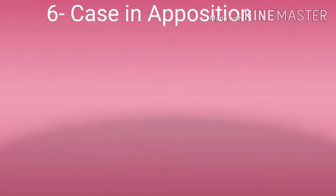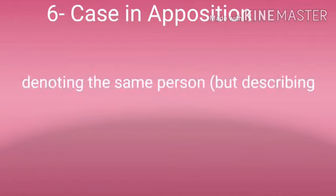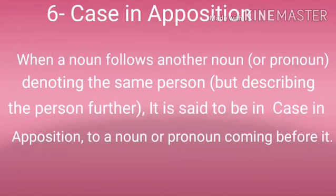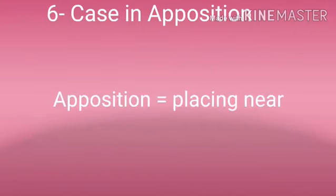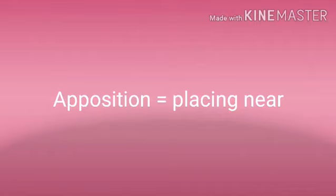The next and last kind, number six, is case in apposition. When a noun follows another noun or pronoun denoting the same person but describing that person further, it is said to be in apposition to the noun or pronoun coming before it. The word 'apposition' means placing near. For example: 'Harry, my brother' — here Harry is described by the words 'my brother.'